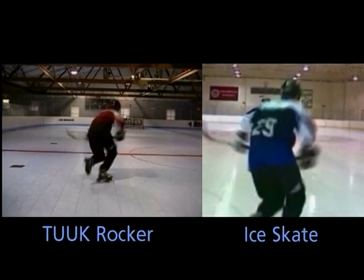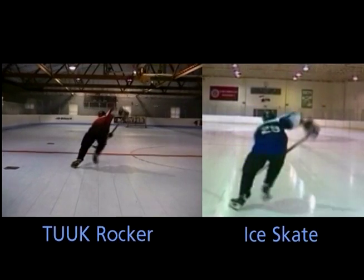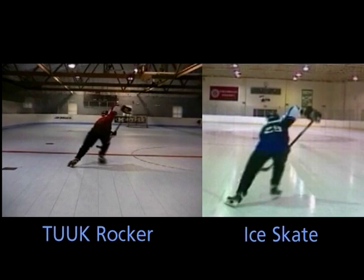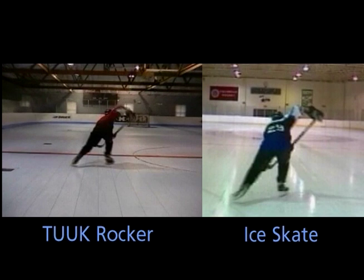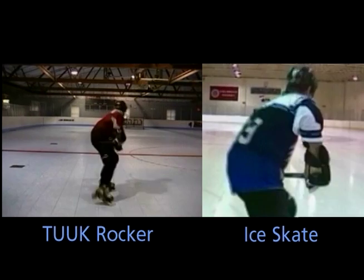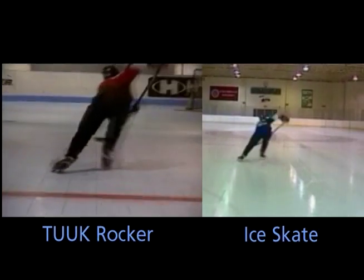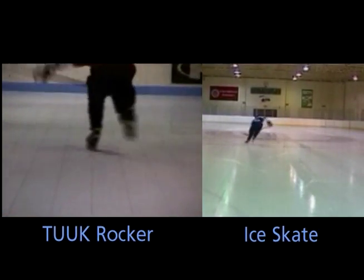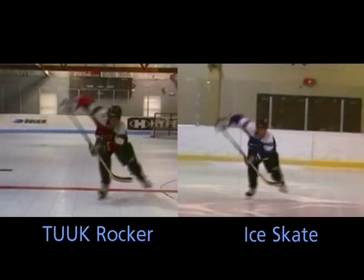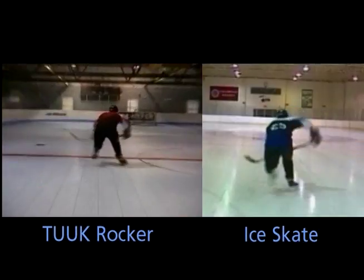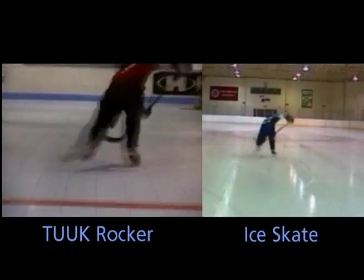When a hockey player skating on ice skates or the tuck rocker takes a full stride at top speed, he maximizes his skating stride by snapping his toe. This motion is often referred to as the snap extension, and it utilizes the player's calf muscle group. This motion is specific to ice hockey skates and the tuck rocker, and cannot be achieved by players using conventional inline skates.